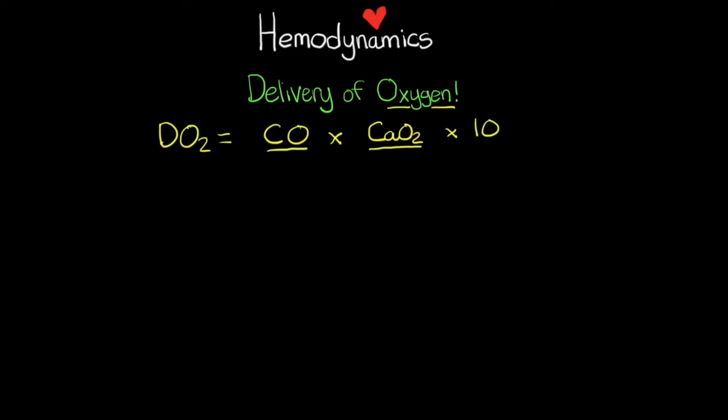The first one I want to talk about is our concentration of arterial oxygen, so that's going to be our CaO2. And big surprise, guess what, there is an equation that we can use to determine what this concentration is. This is going to consist of our hemoglobin times 1.39 times our arterial oxygen saturation, then we're going to add our partial pressure of arterial oxygen and multiply that by 0.003.